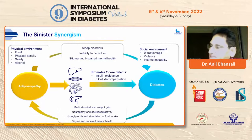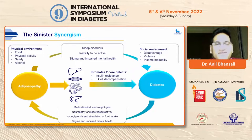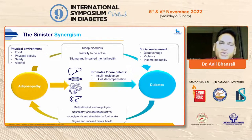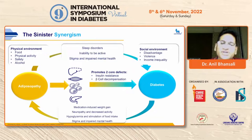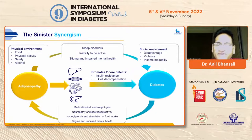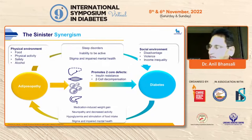A new term recently coined is 'sinister symbolism.' The physical environment, social environment, and personal environment — including sleep disorders, inability to be active, stigma, and impaired mental health — eventually lead to adiposity. This adiposity contributes to both insulin resistance and beta cell decompensation, eventually leading to diabetes. Then a vicious circle starts where medication causes weight gain, hypoglycemia, neuropathy, and further depression, with adiposity and diabetes perpetuating each other.